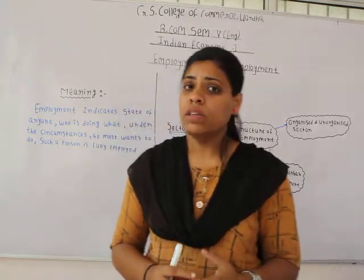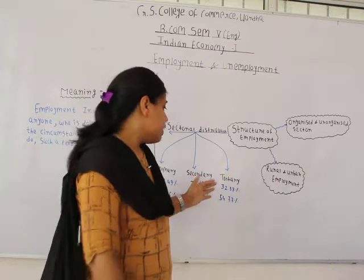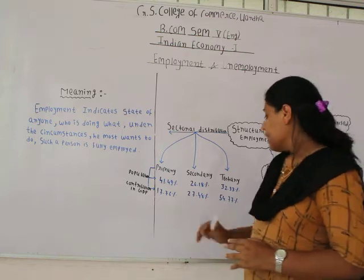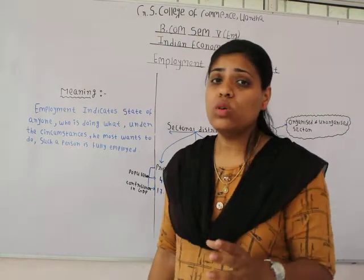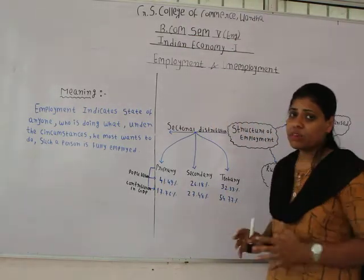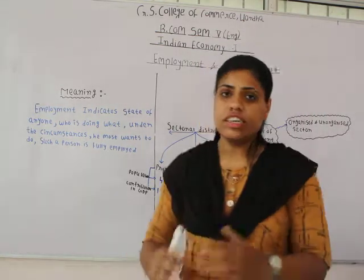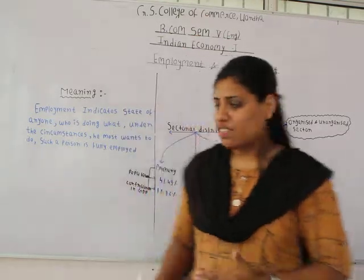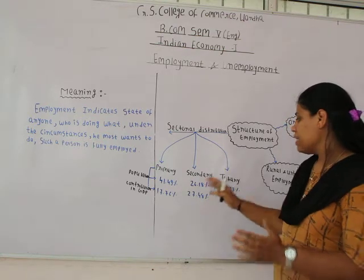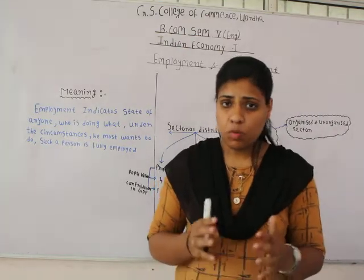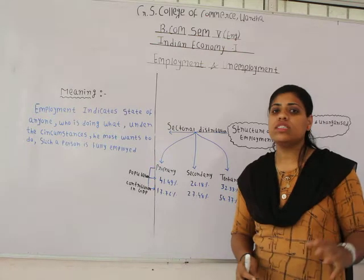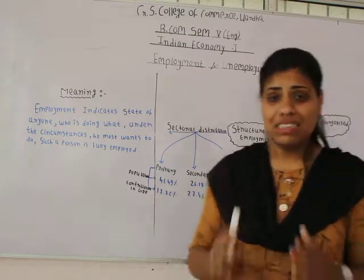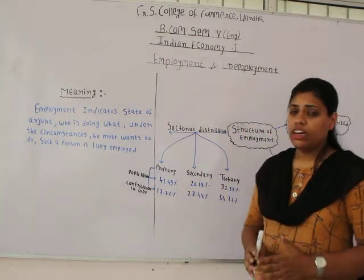The tertiary sector employs 32.33% of India's population and is the sector which contributes the most to our GDP — 54.77%. The contribution of the tertiary sector has been increasing in recent years due to expansion in financial and other services. Even though the primary sector occupies the most of India's population, its contribution to India's GDP is the least, while tertiary sector leads.